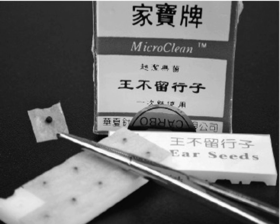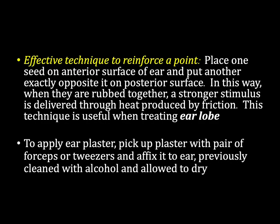Commercially available seeds are inexpensive and expedite treatment. Place the tape over the seed to secure it in the ear. Ear seeds can be attached to all points in the ear. An effective technique to reinforce a point is to place one seed on the anterior surface of the ear and put another exactly opposite it on the posterior surface. When they are rubbed together, a stronger stimulus is delivered through heat produced by friction. This technique is especially useful when treating the ear lobe.